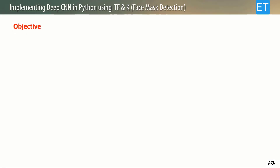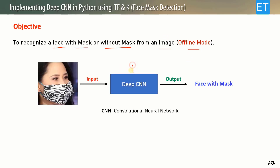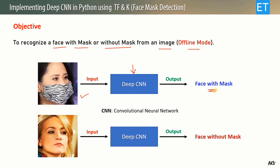Let us first discuss the objective. Our objective is to recognize a face with mask or without mask from an image — in offline mode, not real-time. We implement a deep CNN, a convolutional neural network, which takes an input image and recognizes whether the face has a mask or no mask.